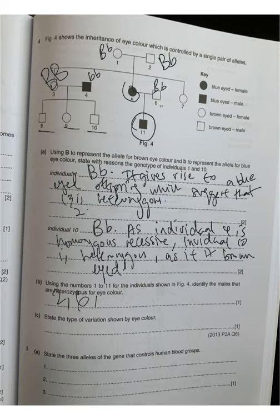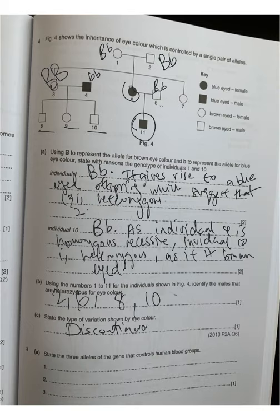State the type of variation shown by eye color — it is only blue or brown, so it is discontinuous variation.